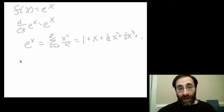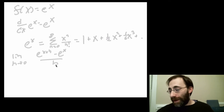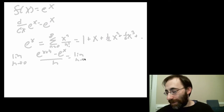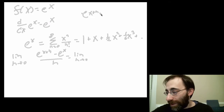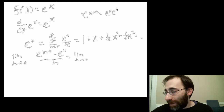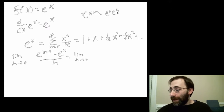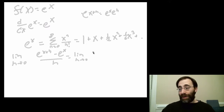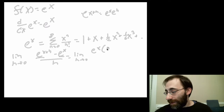We need that series to figure out the derivative. We want the derivative of e to the x, so we use the same definition of a derivative: the limit as h goes to 0 of e to the x plus h, minus e to the x, divided by h. Now, remember that e to the x plus h equals e to the x times e to the h. That means we can pull out e to the x from both terms and get e to the x times the quantity e to the h minus 1, over h.